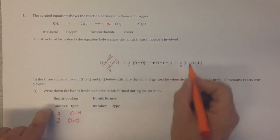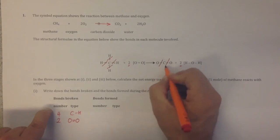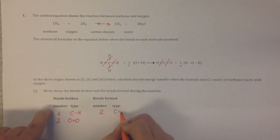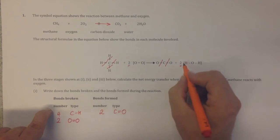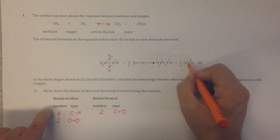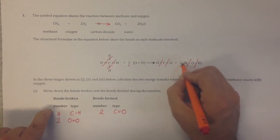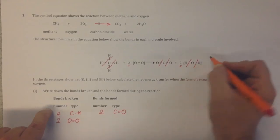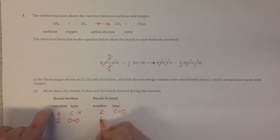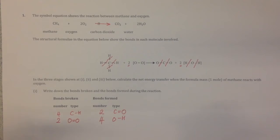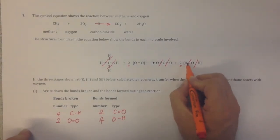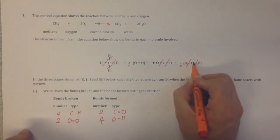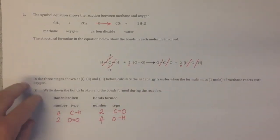On the right-hand side, these are the bonds that are formed. In carbon dioxide, we have two C=O double bonds. In water, for every molecule there are two O–H bonds, and because there are two water molecules, that gives us four O–H bonds formed in total. It doesn't matter whether we write it as H–O or O–H — it's exactly the same bond, because it's the same electrons being shared.